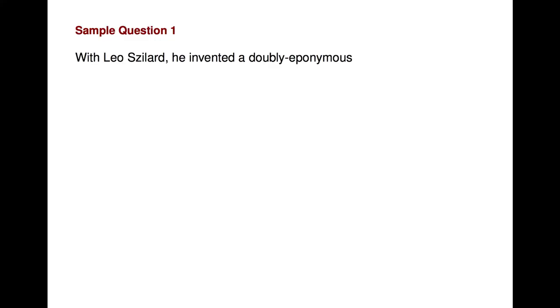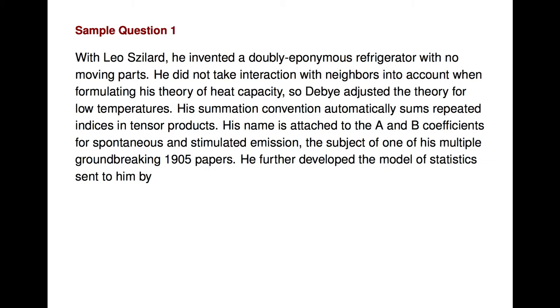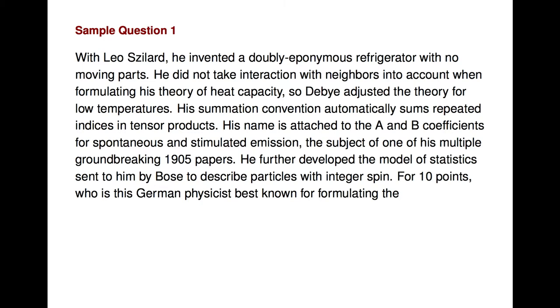With Leo Szilard, he invented a doubly eponymous refrigerator with no moving parts. He did not take interaction with neighbors into account when formulating his theory of heat capacity, so Debye adjusted the theory for low temperatures. His summation convention automatically sums repeated indices and tensor products. His name is attached to the A and B coefficients for spontaneous and stimulated emission, the subject of his multiple groundbreaking 1905 papers. He further developed the model of statistics sent to him by Bose to describe particles with integer spin. For 10 points, name this German physicist best known for formulating the special and general theories of relativity.